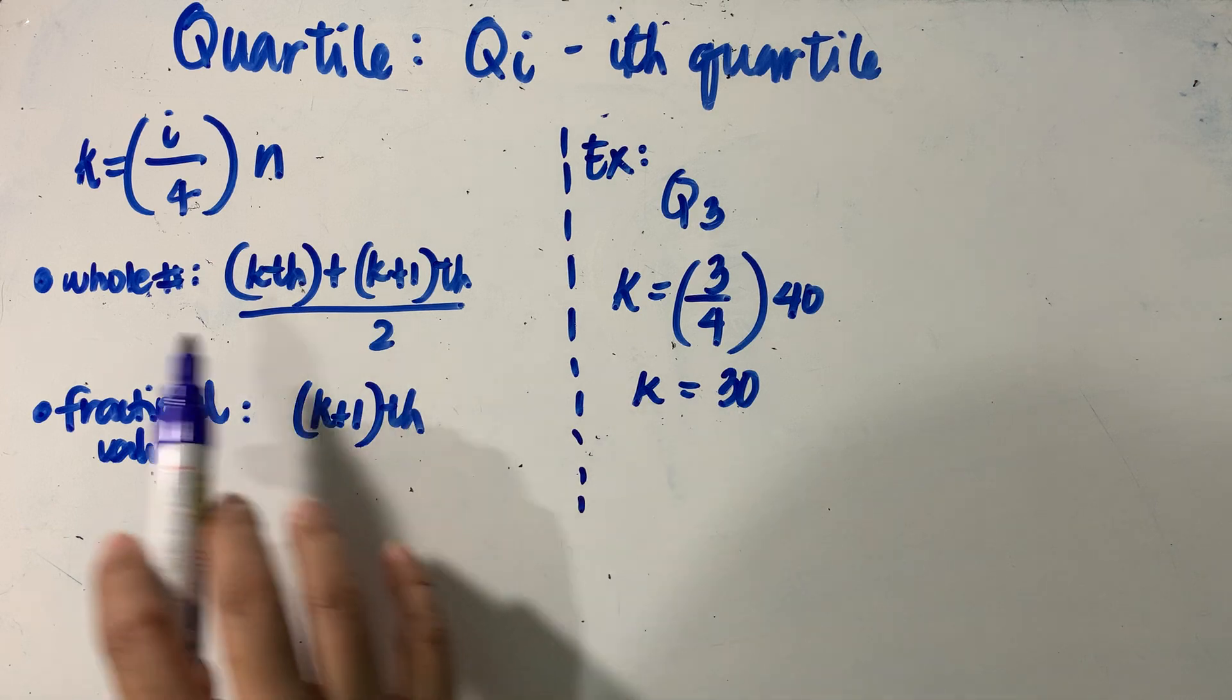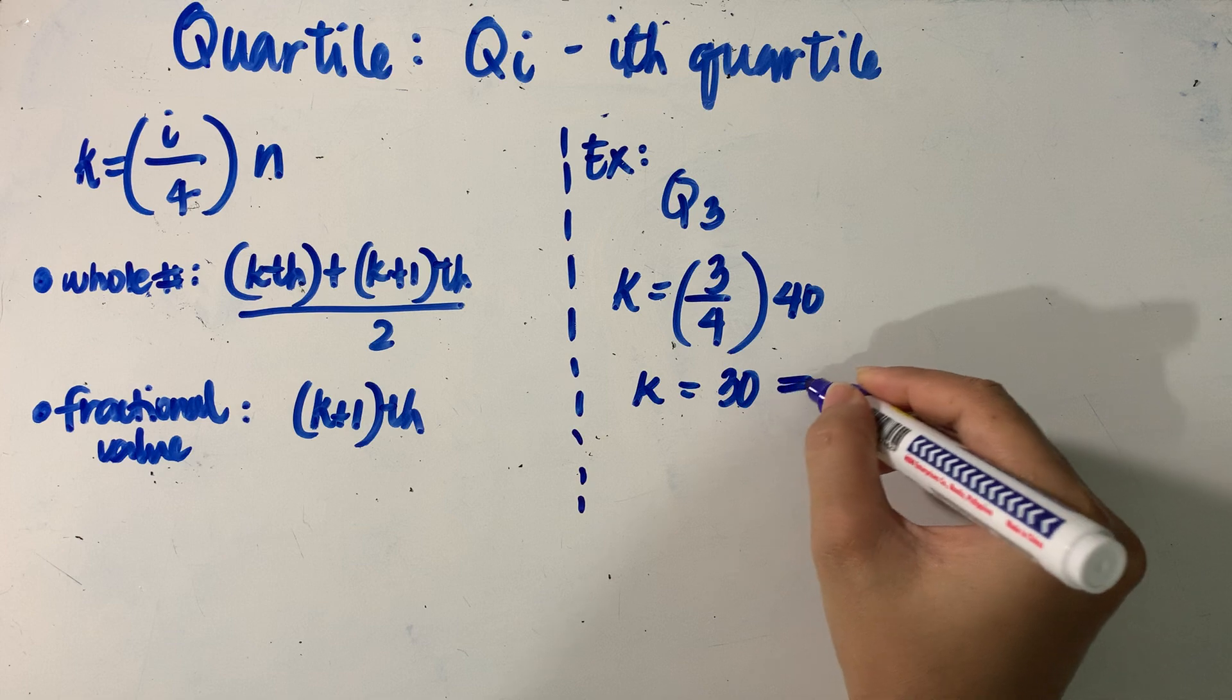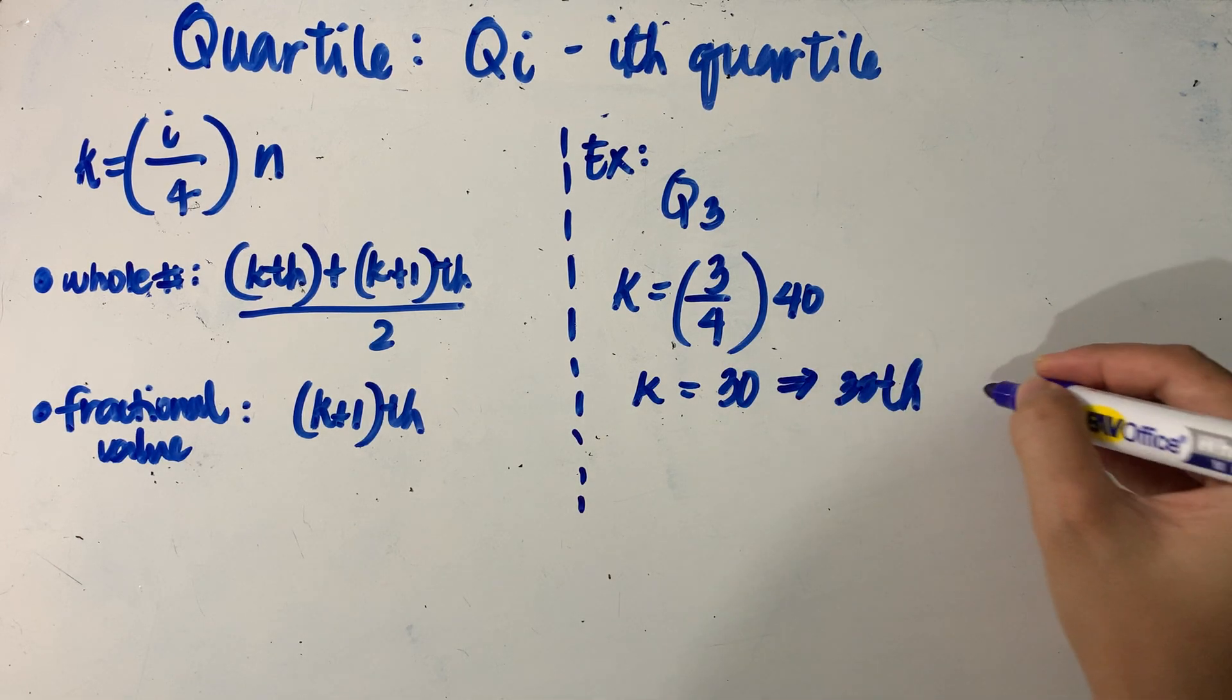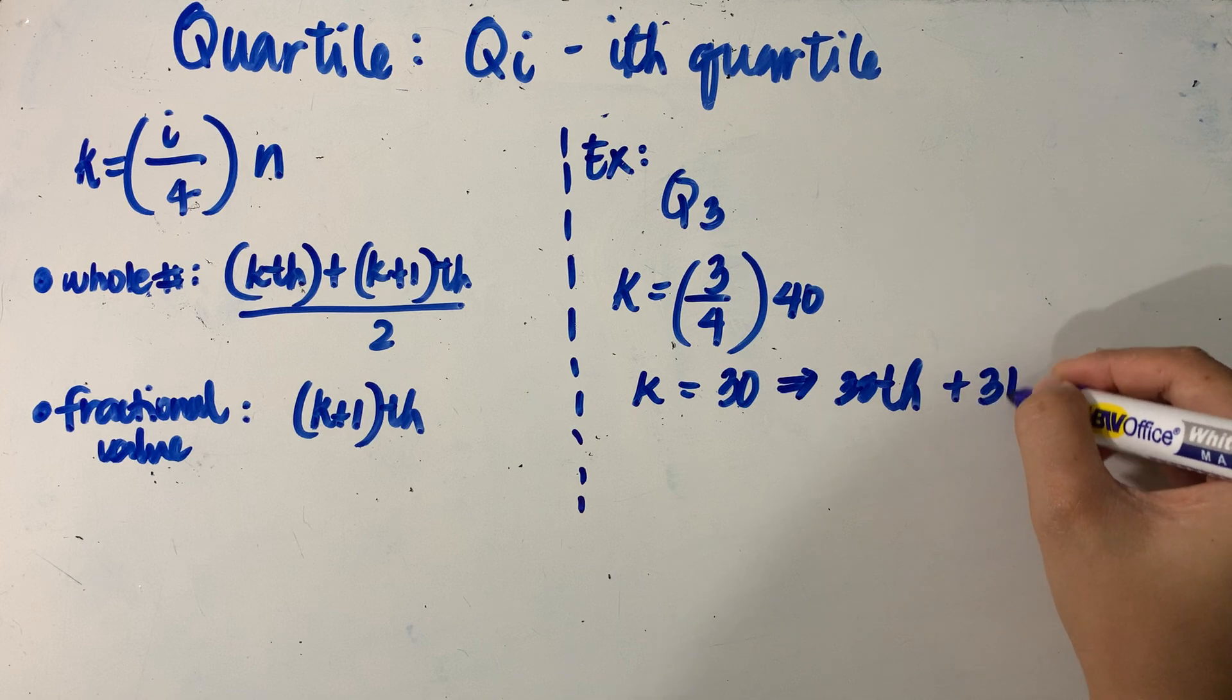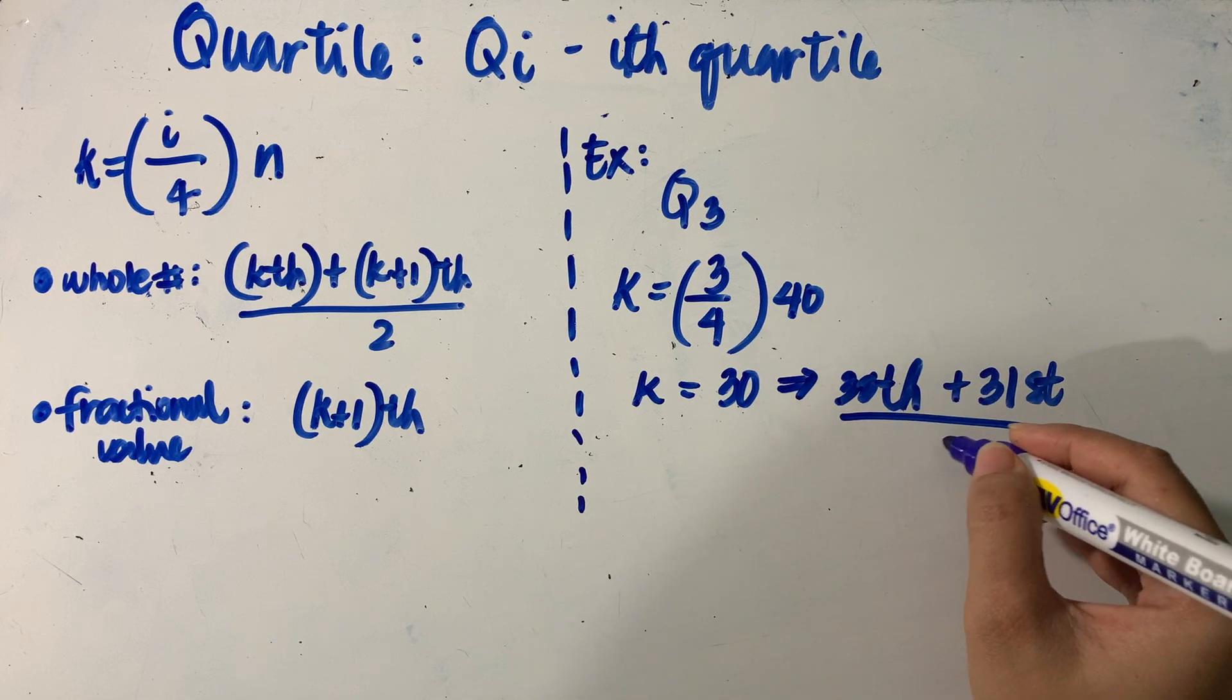Now, since k is a whole number, we will follow this case here, where we will have to determine the 30th data value in our distribution, add it to the next data value that comes after that, or our 31st data value, and we divide it by two.